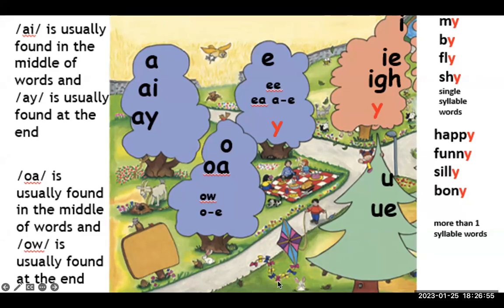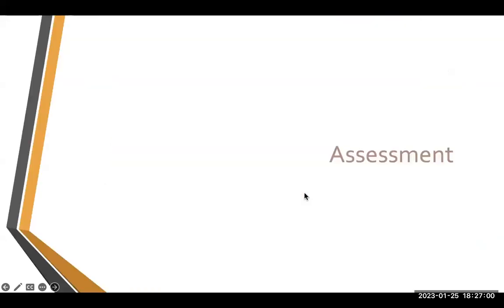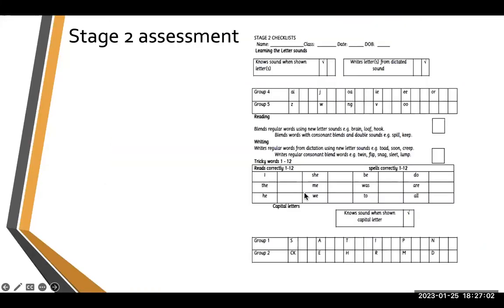Assessment resources are available — anyone interested in getting the pack of assessment PDFs can contact us or inbox the presenter. In Stage 2, assessment covers whether children know their sounds, can write letters, blend, write tricky words, use capital letters, and similar skills.